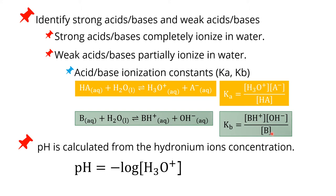You need to write the corresponding K properly. Ka relates to hydronium ion concentration. Kb relates to the hydroxide ion concentration. Very importantly, pH value can be calculated from the negative log of hydronium ion concentration only. So whenever you are asked to calculate the pH of a solution, you need to find out what is the concentration of hydronium ion in the solution.